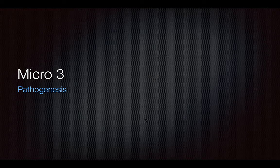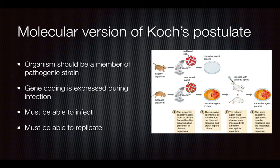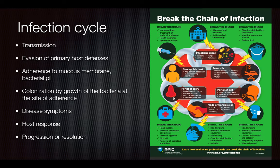Hey everybody, welcome back to microbiology. Today we're going to go through the pathogenesis of bacteria. We should know Koch's Postulate, where an organism should be able to infect another organism or a host, and that needs to be isolated. If it's injected into another host, it needs to be able to replicate and also induce an illness in the second host. Gene coding is expressed during the infection, and the infection cycle is important to know.